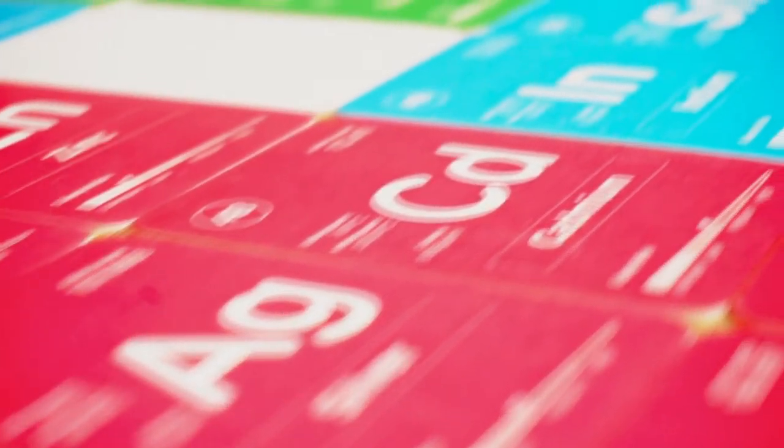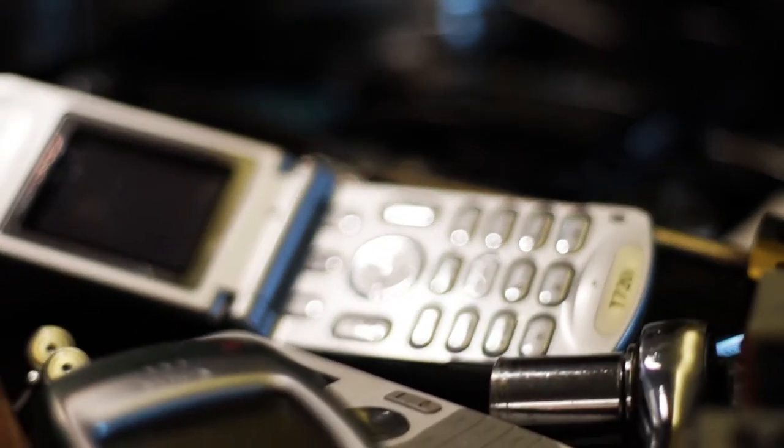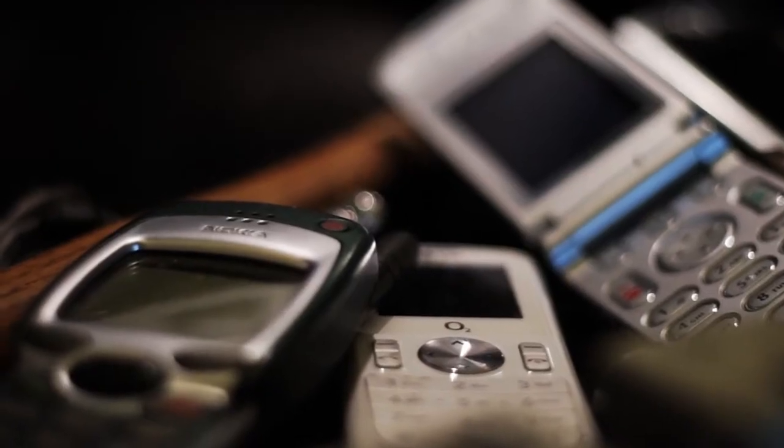There are only really 90 or so useful elements in the periodic table that we can access and use in everyday life. And what we find is about 40 or so of those are actually found in a typical mobile phone and its electronics.